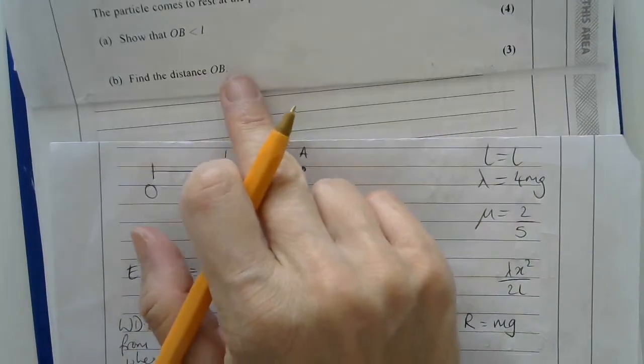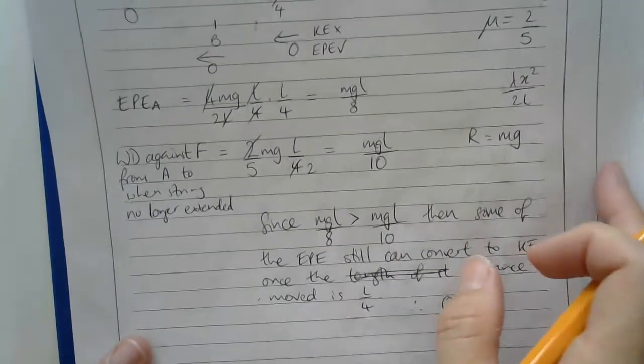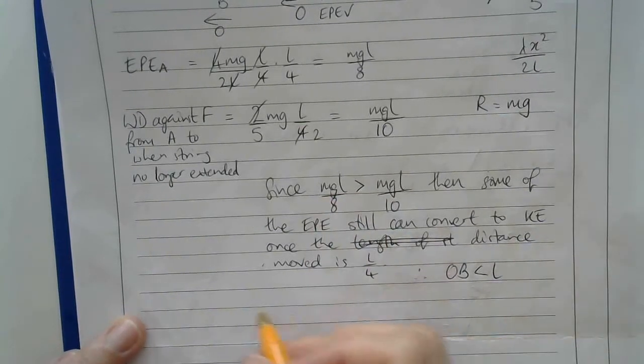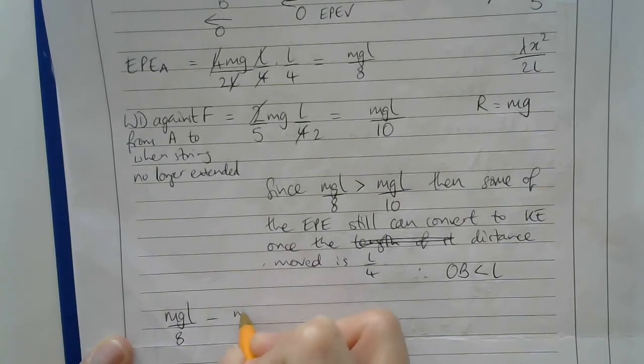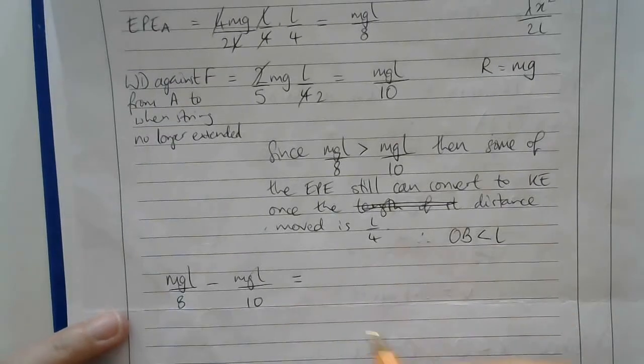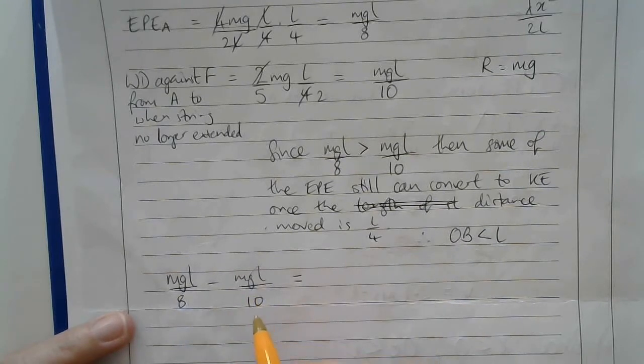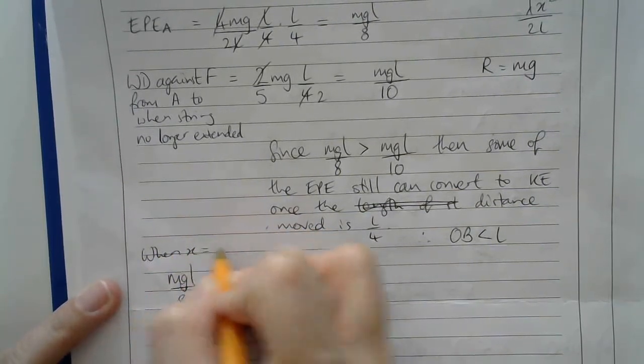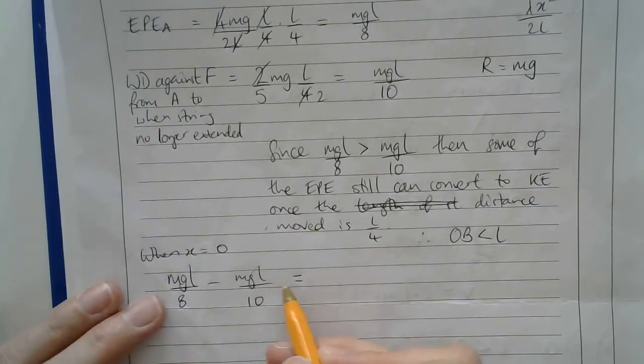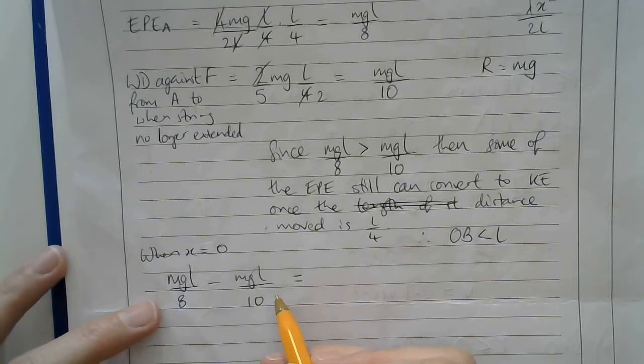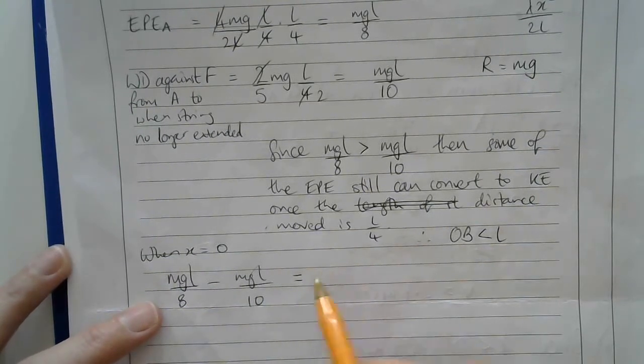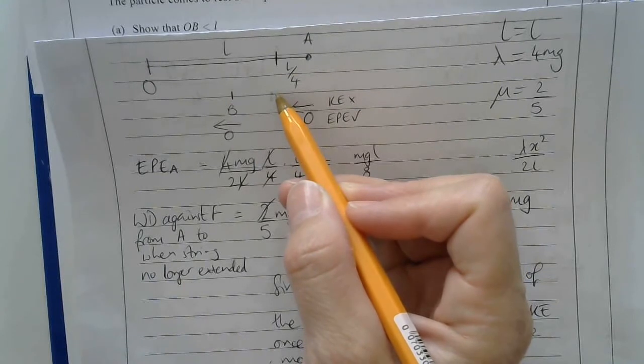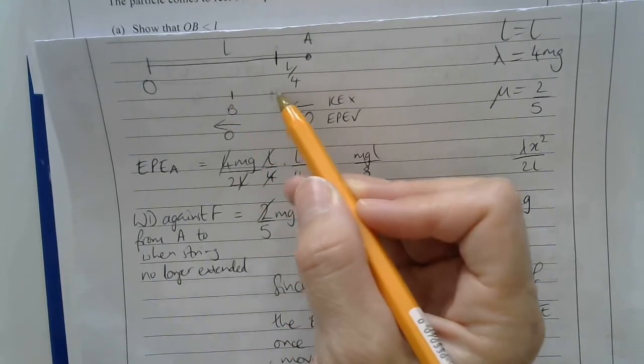Then it asks me to find this distance OB. The energy that it has at that point is the difference between these two. So mgL over 8 minus mgL over 10 will give you the energy that you've got left at that point, when x equals 0. That's the energy you've got left at that point. In that moment, it is kinetic energy because it's moving. But what we want to see is how far it moves beyond that point. That kinetic energy is going to turn into work done against friction.